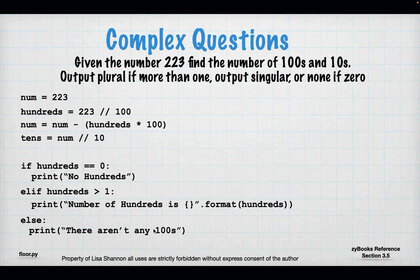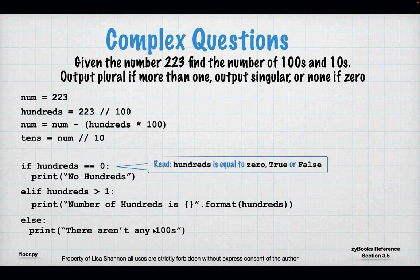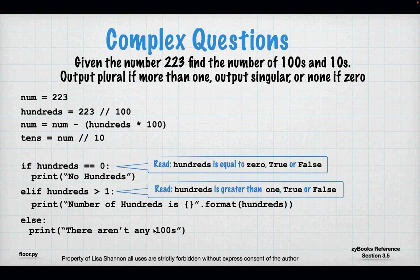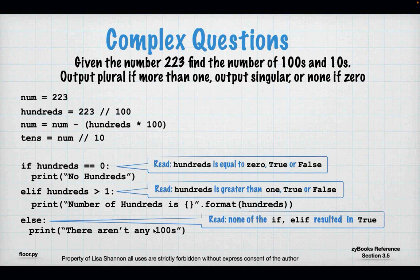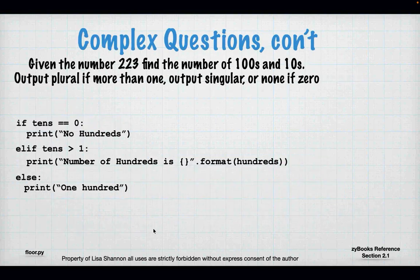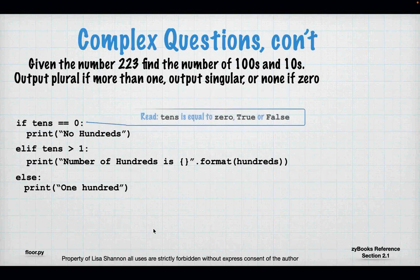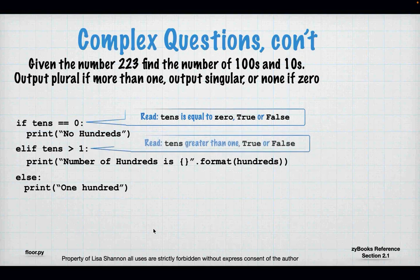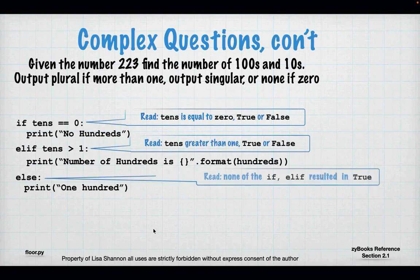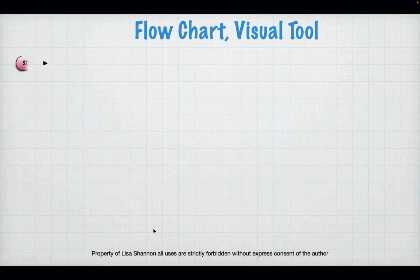Here's the flowchart: is hundreds equal to 0, true or false? Is hundreds greater than 1, true or false? If none of the if/elif returned true, the else handles it. And here's the same for tens: if tens is 0, output no tens; elif tens is greater than 1, output number of tens; else there's one ten. You'll see there's an order — I check for 0 first, then for greater than 1, and let else handle exactly 1.